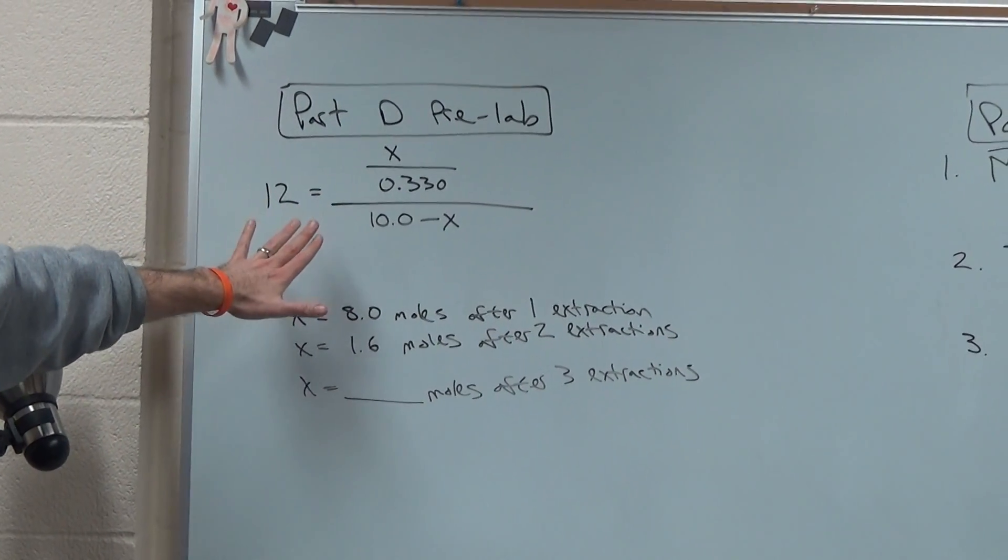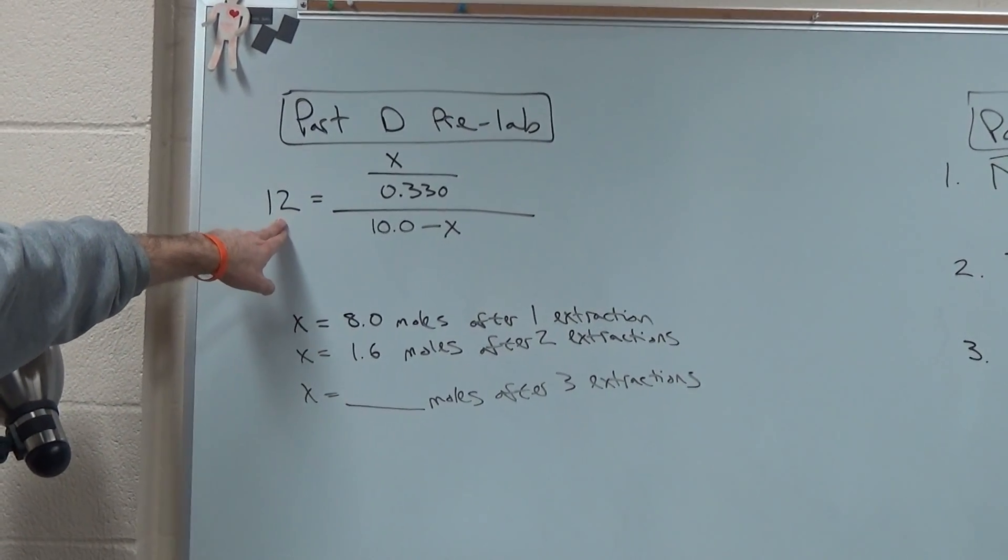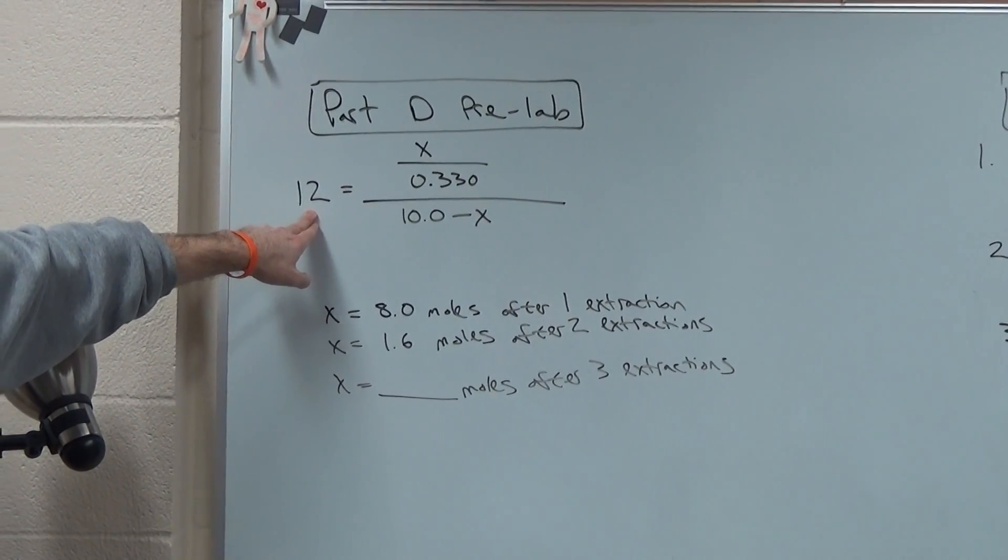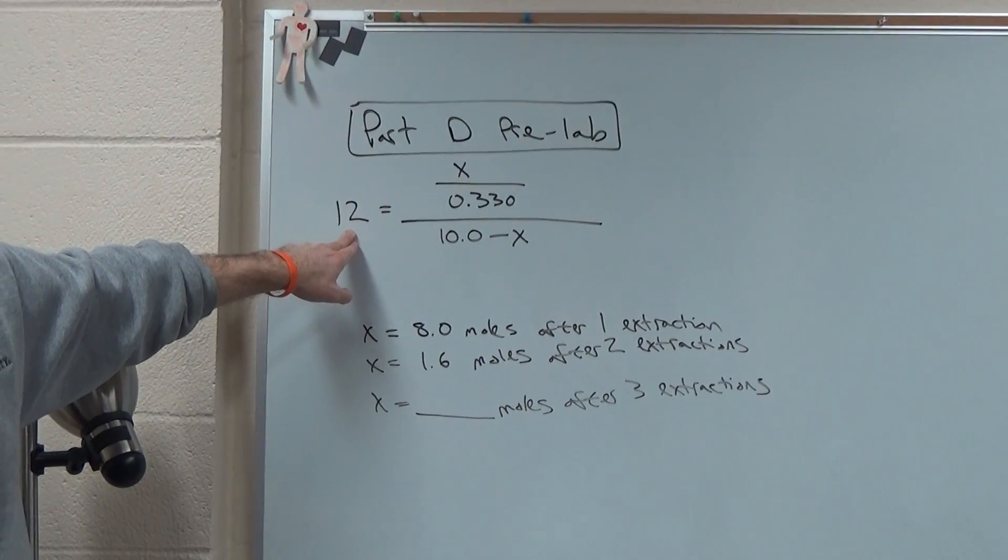But keep in mind what these numbers are. This is a value of k, the partition coefficient, that was just given to you as an example. But you'll have a value of k that you calculate on your own.